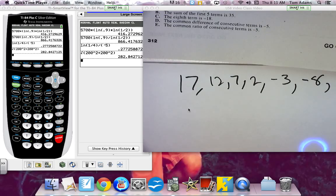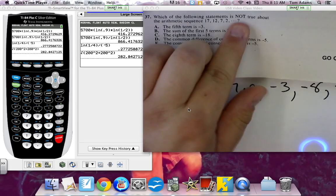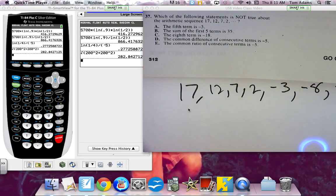So it says the fifth term is negative 3. Now they're looking for what's not true, right? It says what's not true. The fifth term is negative 3, so that's off the list.